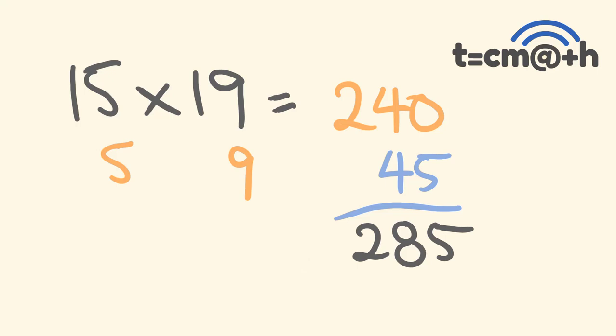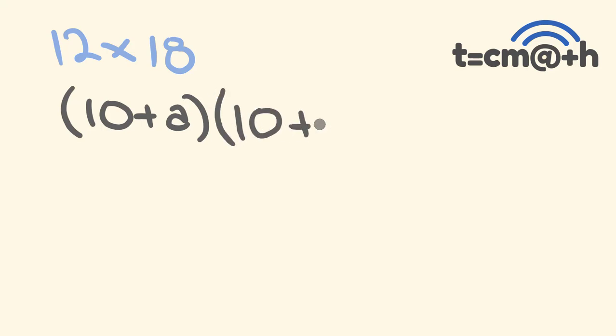So why does this work? Let me show you. First off, you're going to think about these numbers here. I'll just give you an example. Say we were multiplying 12 times 18. You can probably work this out in your head, but I just want to show you what's going on here. I'm going to think about this being a number 10 plus a. In this case, 10 plus a, a is equal to 2. And we're multiplying this by 10 plus b. In this case, b is equal to 8. But these numbers can obviously vary.